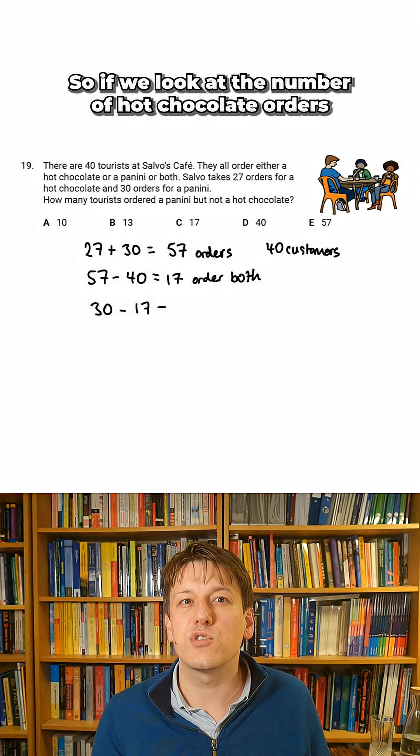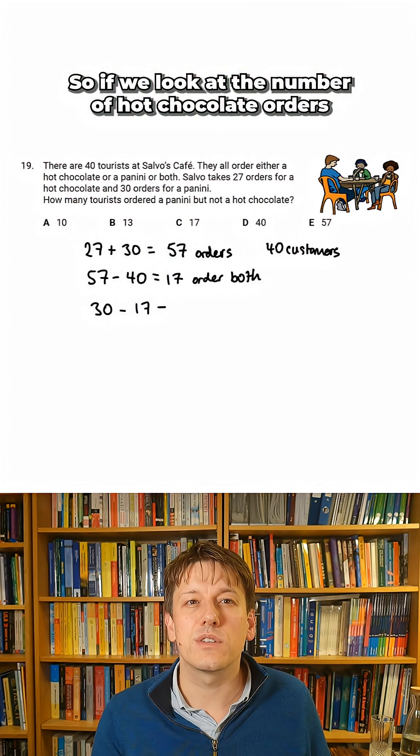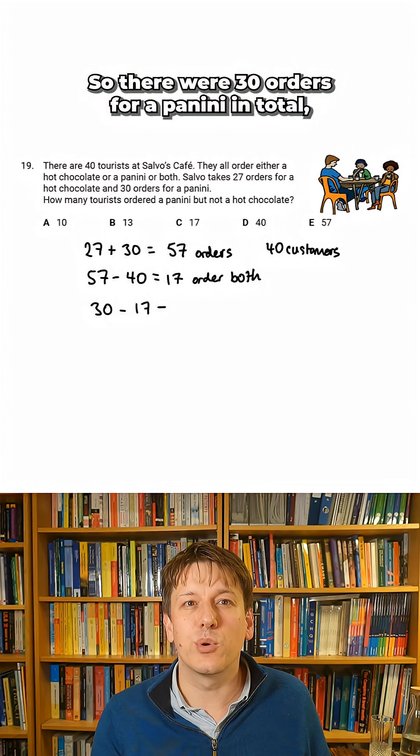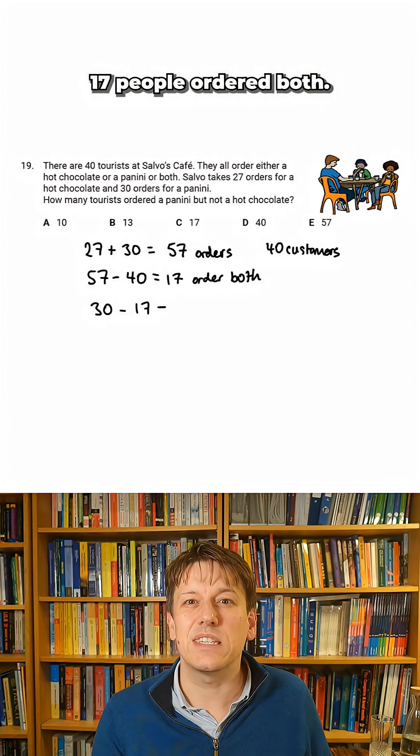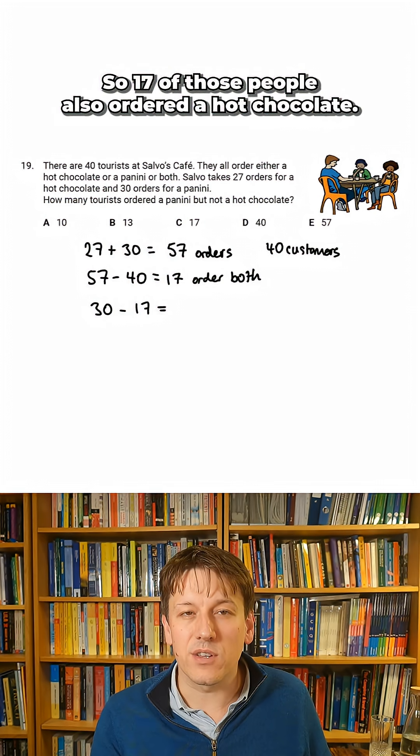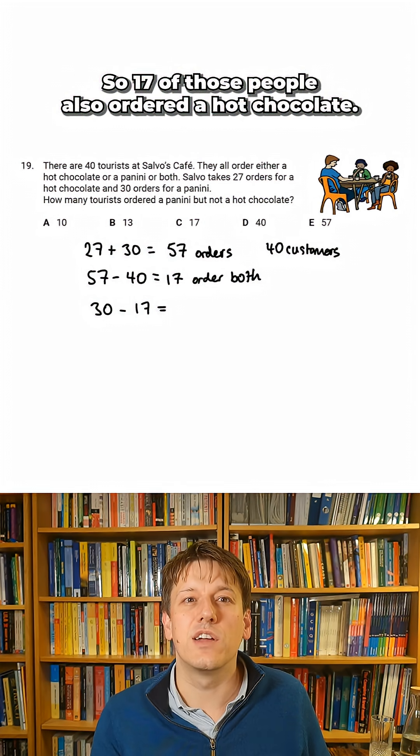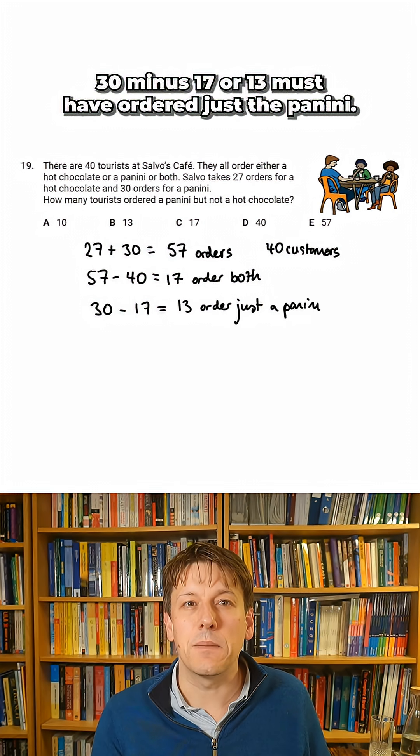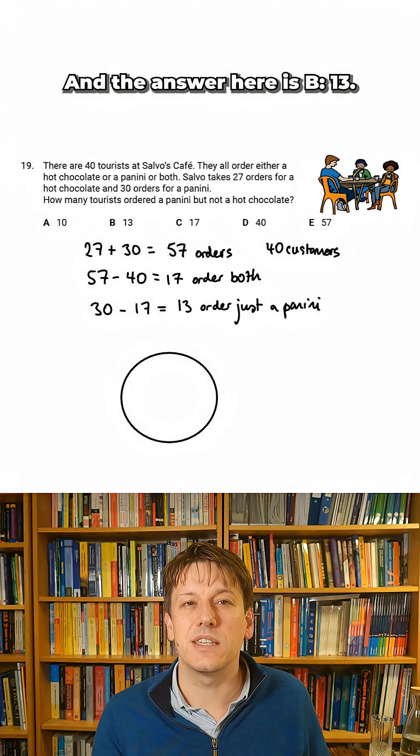So if we look at the number of hot chocolate orders and panini orders we're interested in paninis here so there were 30 orders for a panini in total. 17 people ordered both so 17 of those people also ordered a hot chocolate. 30 minus 17 or 13 must have ordered just the panini and the answer here is B13.